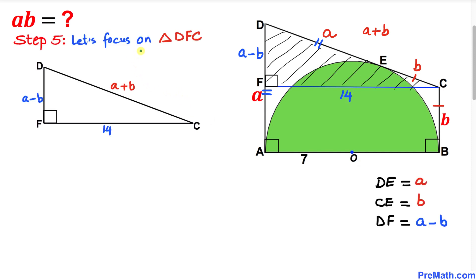In this next step, let's focus on triangle DFC. Since triangle DFC is a right triangle, we're going to use the Pythagorean theorem: a² + b² = c². If I call the horizontal side a, the vertical side b, and the hypotenuse side c, then we can write (a+b)² = 14² + (a-b)².